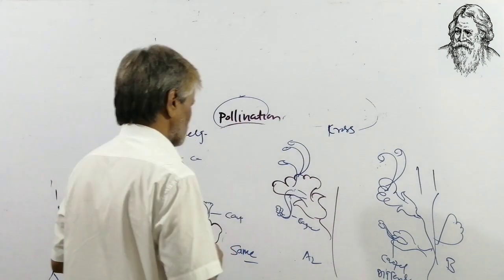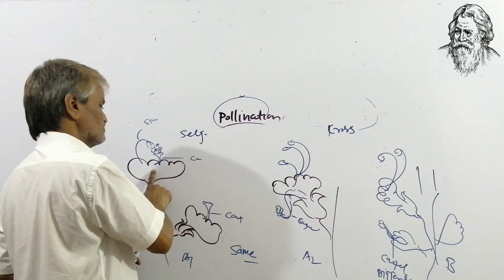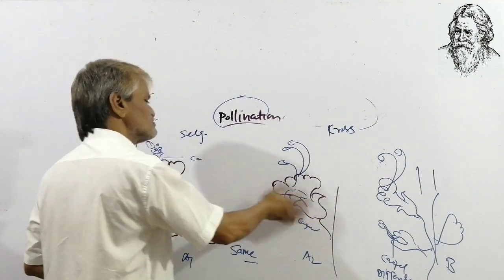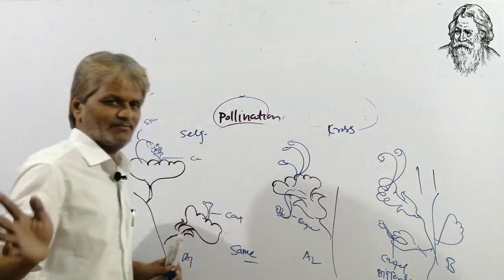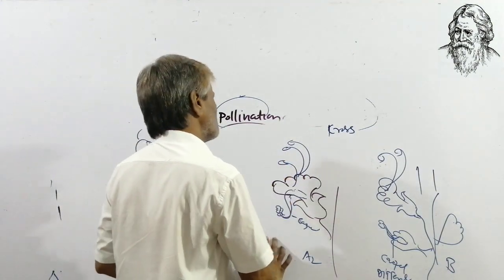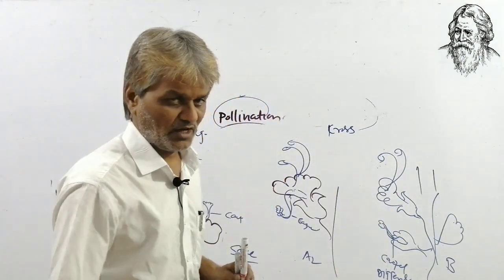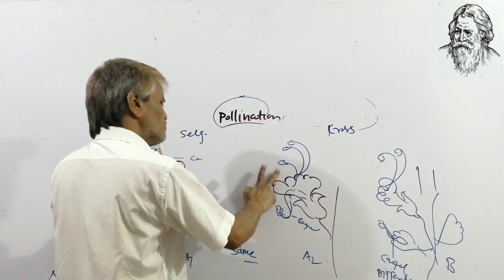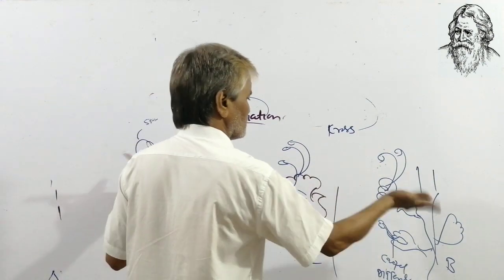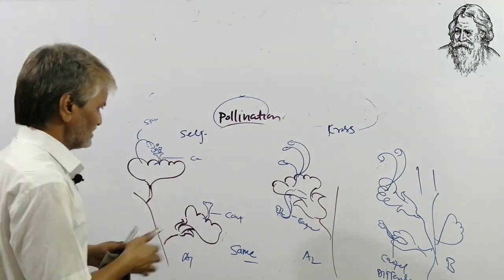Cross-pollination: transfer of pollen grains from the anther of one flower to the receptive stigma of another flower present on another plant body of the same species or different species is called cross-pollination. Pollination takes place between two flowers of two plants of the same species or different species.